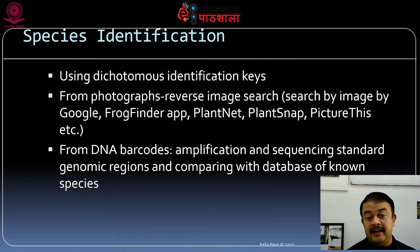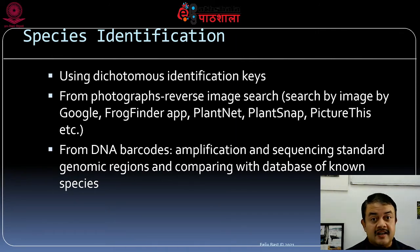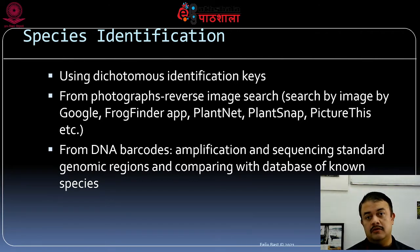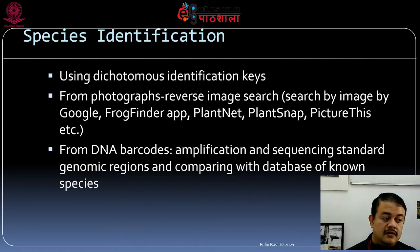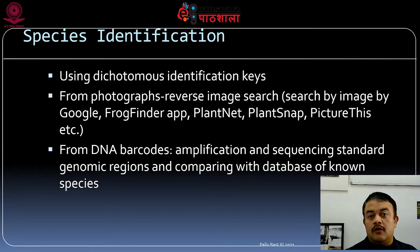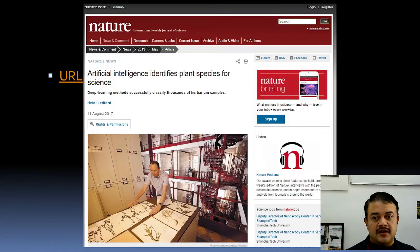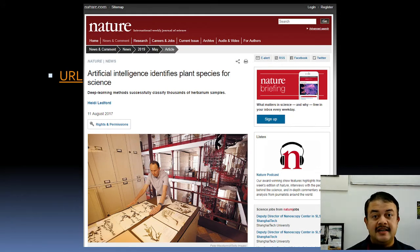DNA barcodes are another method. Earlier they were very expensive, but nowadays the cost has come down significantly — though it is still not free as apps are. DNA barcoding is much more reliable than app-based identification, but it can only identify known species. AI is now entering the picture and is significantly changing how we classify taxa in herbaria and how plant, animal, frog, and butterfly identification algorithms work.